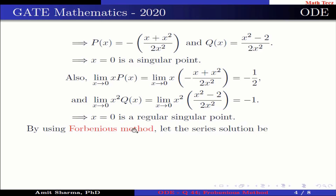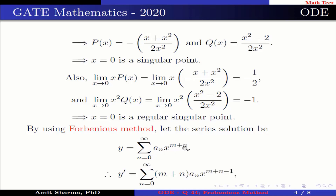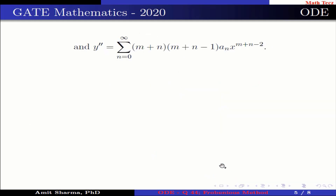Now by using Frobenius method, let the series solution be y = Σ(n=0 to ∞) aₙ x^(m+n). Therefore y' = Σ(n=0 to ∞) (m+n) aₙ x^(m+n−1), and y'' = Σ(n=0 to ∞) (m+n)(m+n−1) aₙ x^(m+n−2).